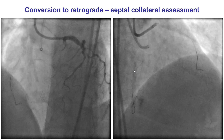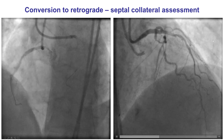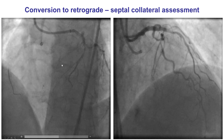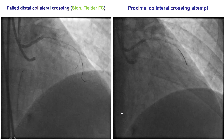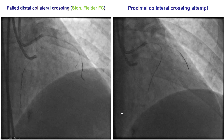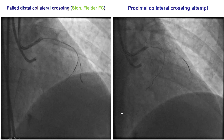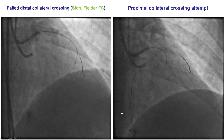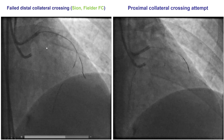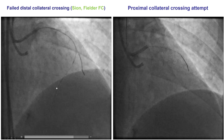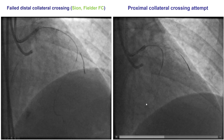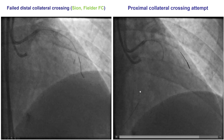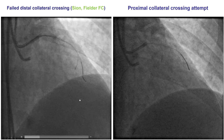We obtained a contralateral femoral access and placed the guide in the left main, then performed contralateral injections showing filling of the PDA and the PLV. There were some septal and some epicardial collaterals. Given the failure to cross antegradely and the presence of a bifurcation distal to the distal cap, we decided to try retrograde crossing as a bailout for the dissection. There were two septal branches. We had a hard time getting to the first one, so we advanced to the second septal branch and did surfing using multiple wires including the Sion and the Fildер FC, but we were unable to cross from the second septal.